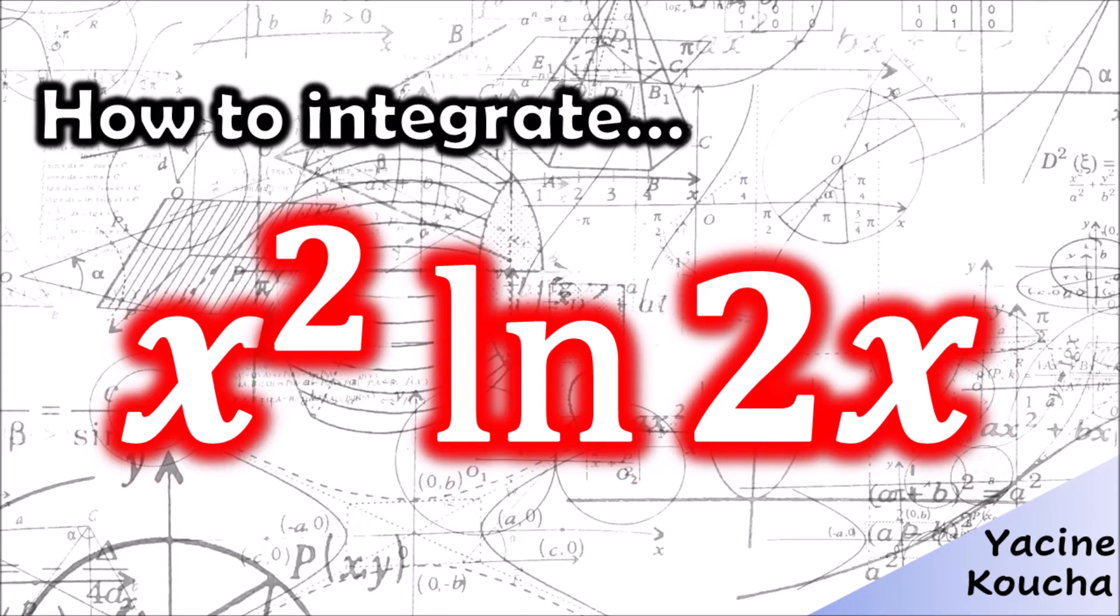you must always set that as the function that you want to differentiate. In other words, we're going to set that as our u, meaning the other part, the x squared, we're going to use it as v prime and we're going to integrate that. So without further ado guys, I'm going to show you what I did. So let's do this.